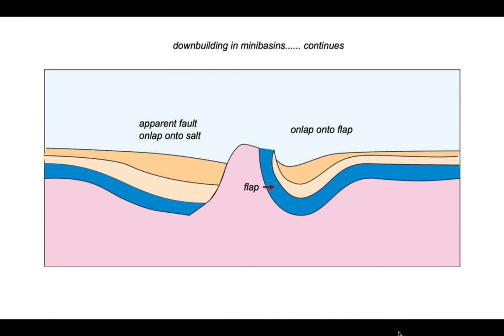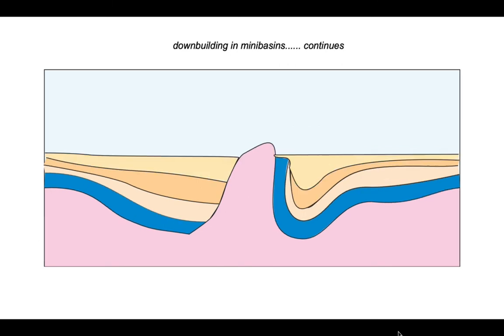Sedimentation in the mini basin on the right on laps the flap, which is otherwise protecting the edge of the salt body. And so down building can continue like this. Notice the flap continues to deform as the salt moves.